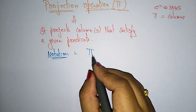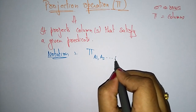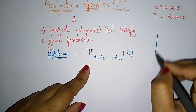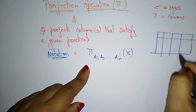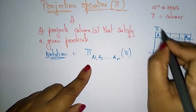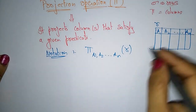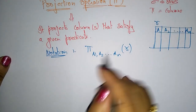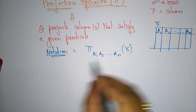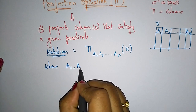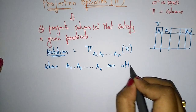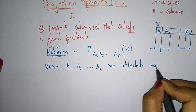The notation for the projection operation is: pi A1, A2, up to An of R. Pi is used to select only the columns — columns are nothing but attributes. Here A1, A2 up to An belong to relation R, where R is the table name. It selects columns based on the condition that satisfies a given predicate, where A1, A2 up to An are attribute names of relation R.